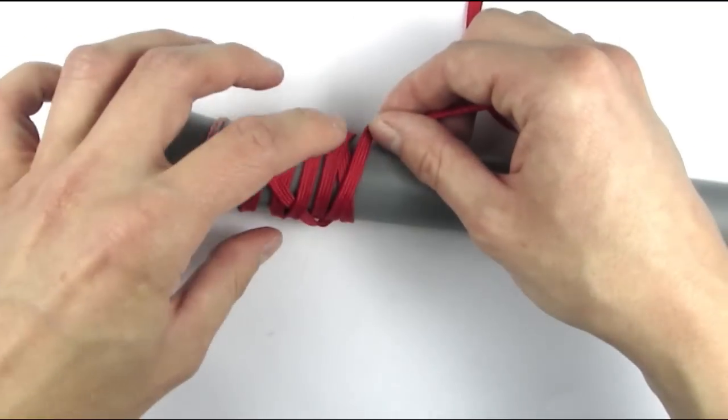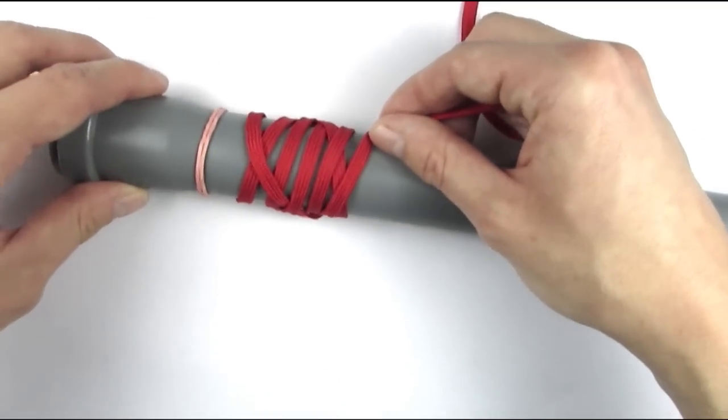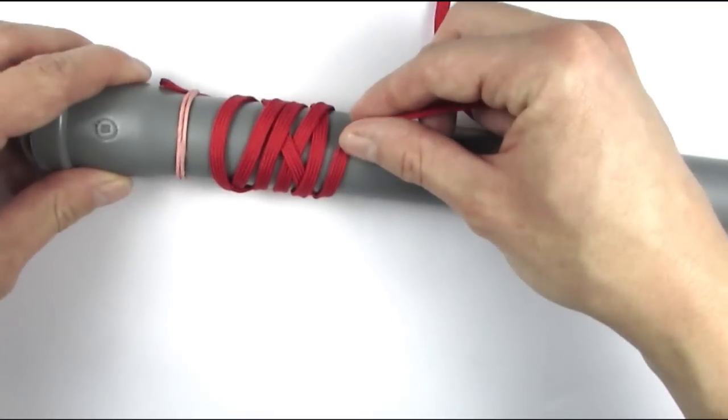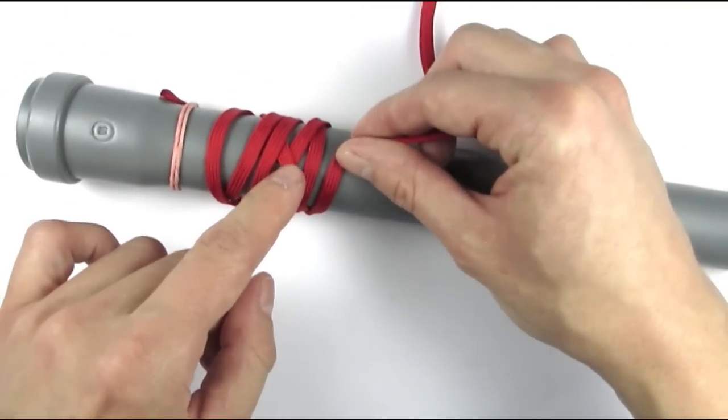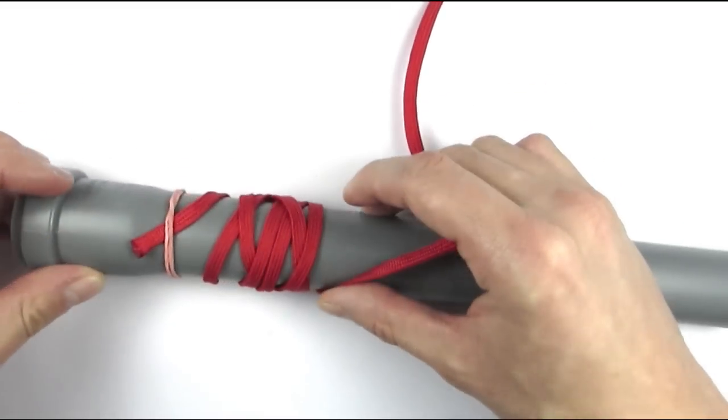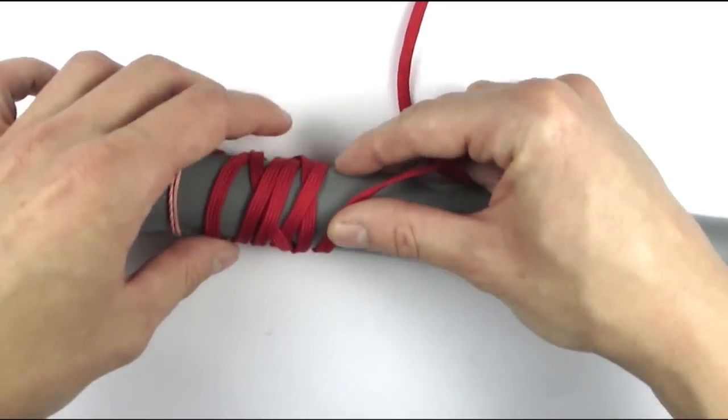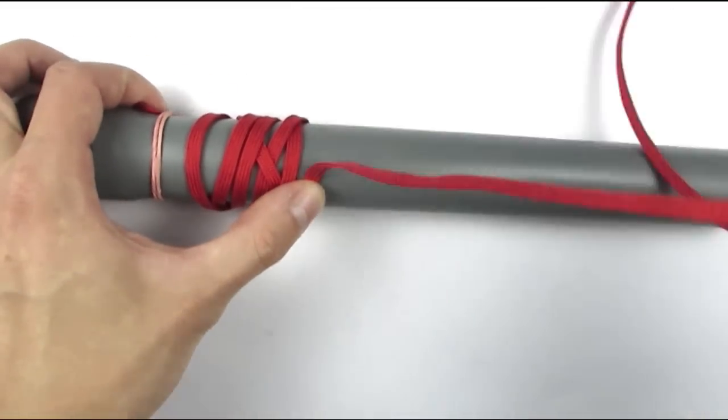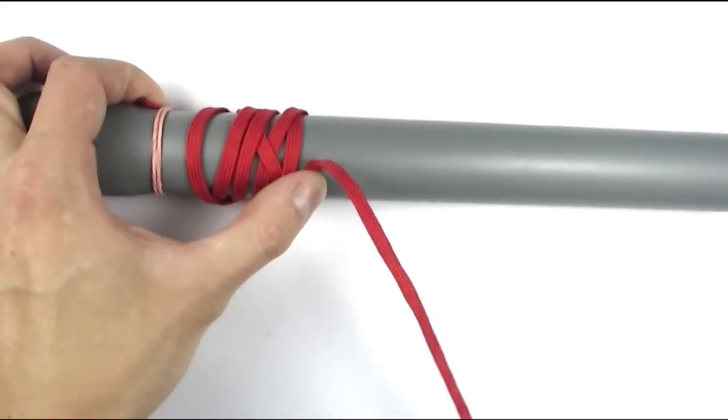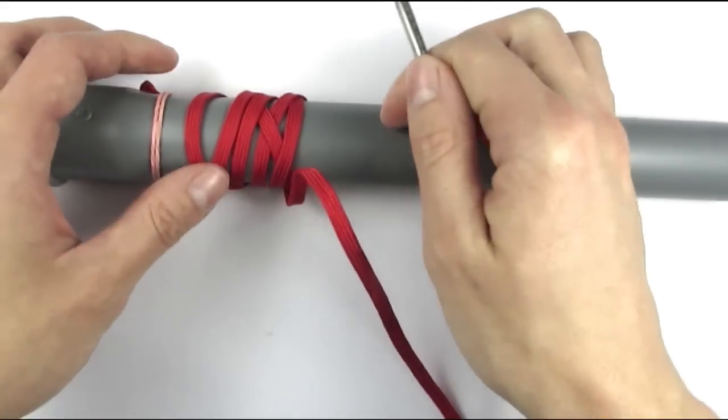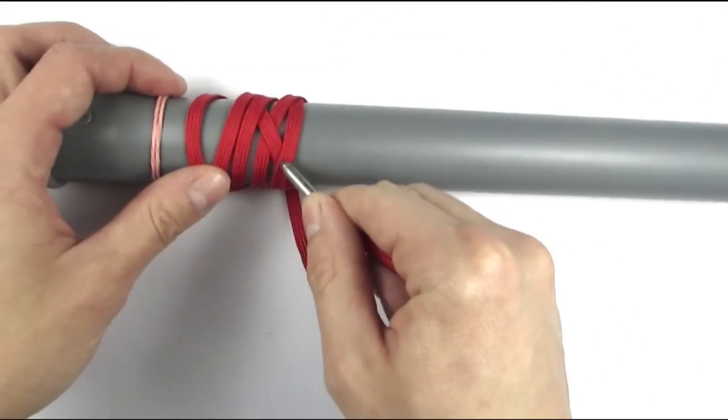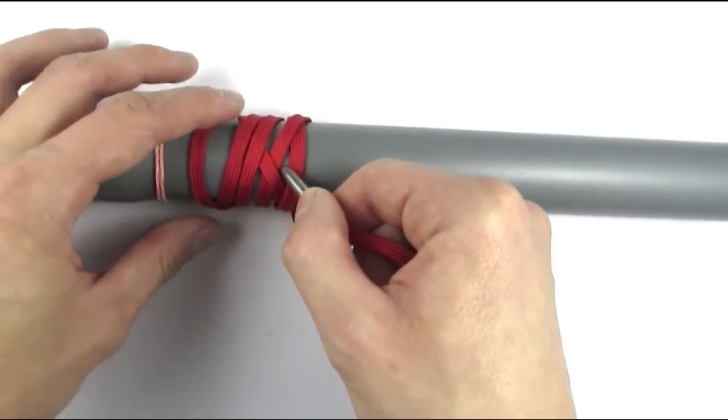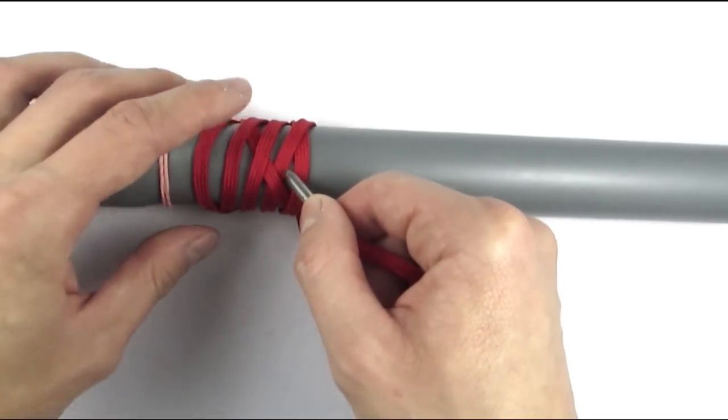So we have come here to the top. And we're now going to go into the knot. We're going to go the same as the cord to our right or opposite to the cord to our left. So if the cord to our left goes under, we're going to go over. Then it goes over so we're going to go under.